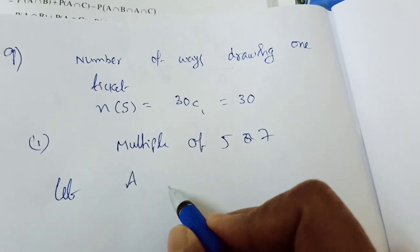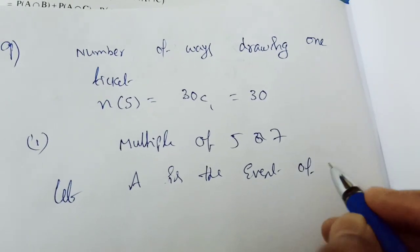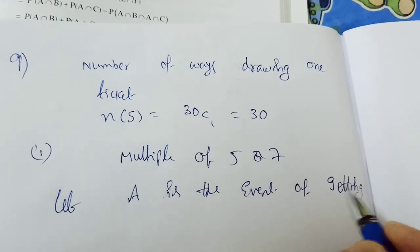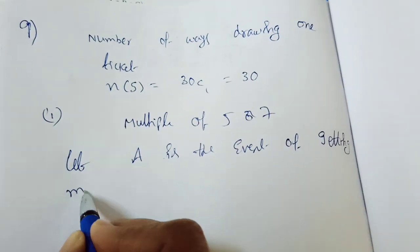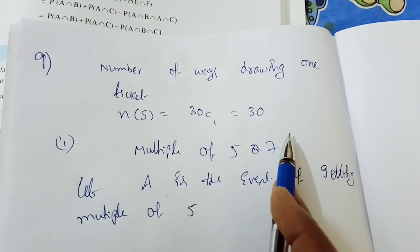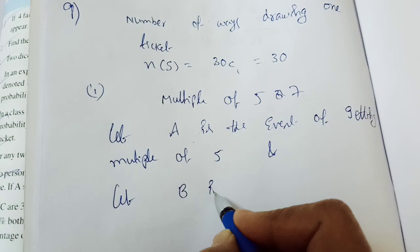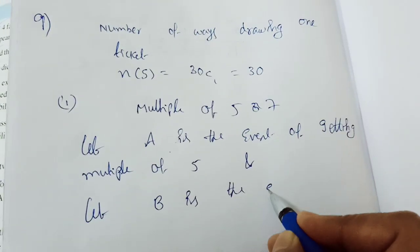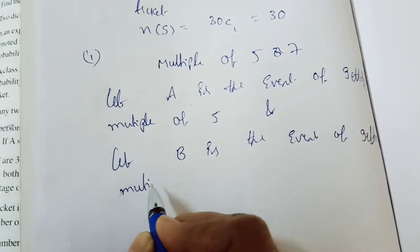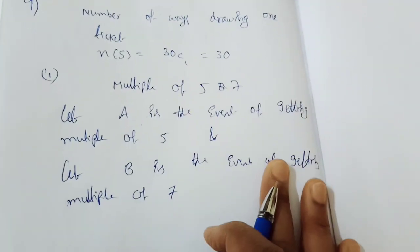A is the event of getting a multiple of 5. And B is the event of getting a multiple of 7.